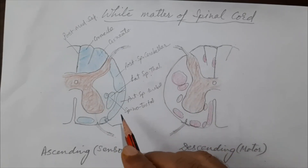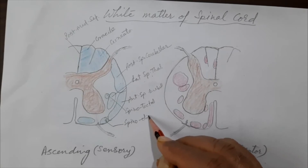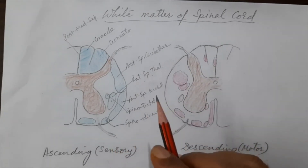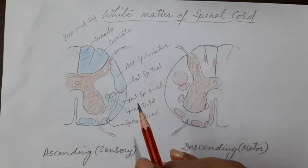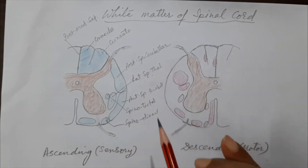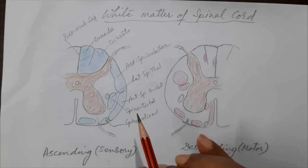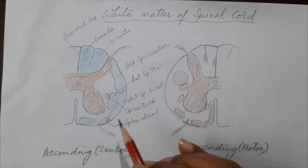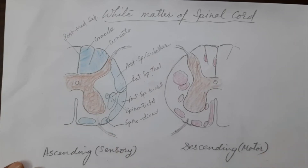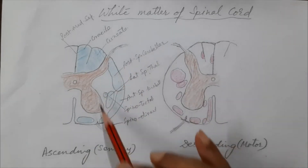Also in the lateral funiculus is the spinoolivary tract, which goes from the spinal cord to the olivary nucleus in the medulla — just lateral to the pyramidal tract on the external surface. This tract carries proprioceptive impulses via the inferior olivary nucleus — again from muscles, joints, and tendons. This completes the ascending or sensory tracts of the lateral column.